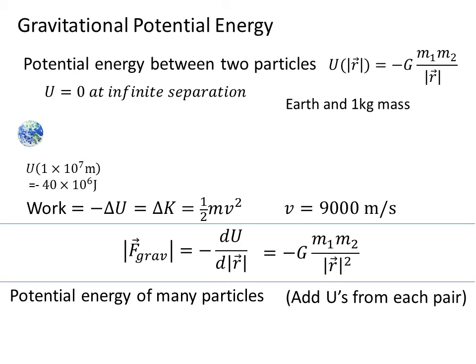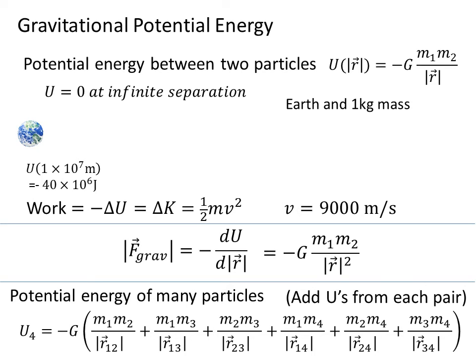The potential energy of many particles is given by just adding up the U's from each pair of particles. Or, in other words, for a four-particle system, we have minus G times the six different possible combinations of these four pairs.